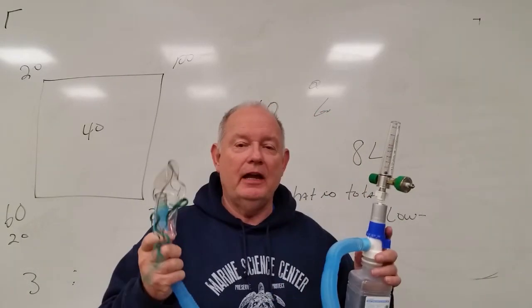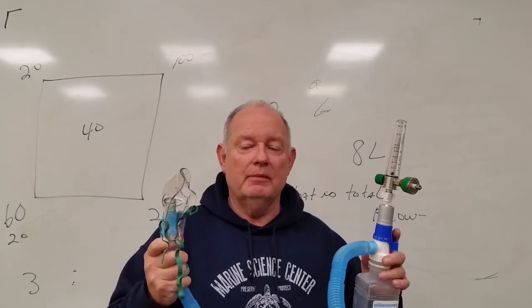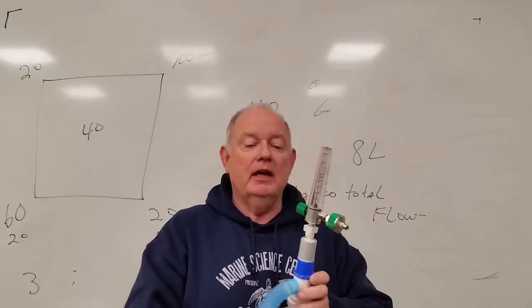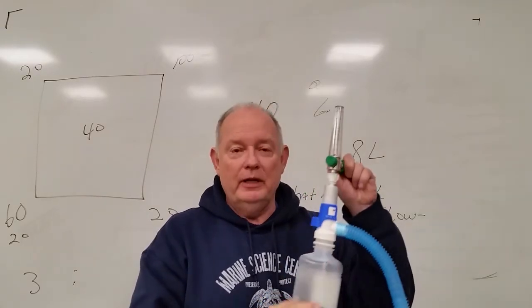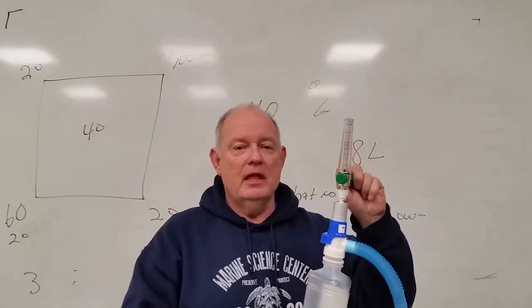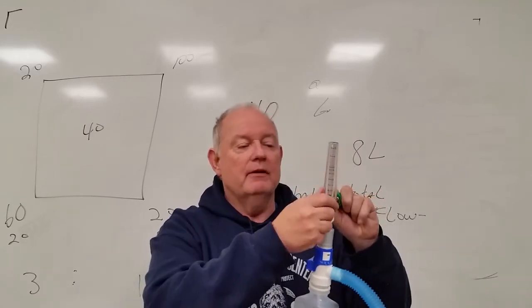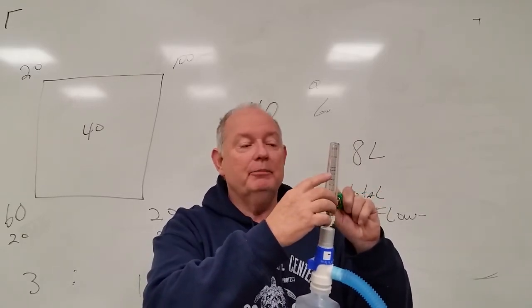This is the type of air entrainment mask they are talking about. A face mask with an aerosol. The aerosol is plugged in at the flow meter, which is connected to the flow meter which is plugged into the wall. The flow meter is then turned up to 8.